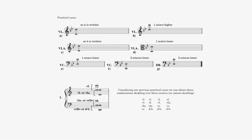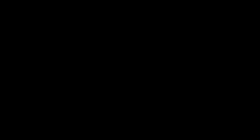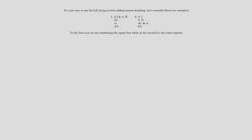As you can see, there are 4 arrangements in octave doubling over 3 octaves. If we consider unison doubling, there are multiple combinations and it is easy to use the full string section.